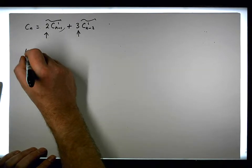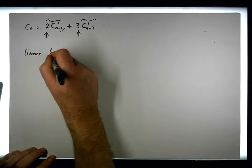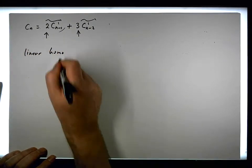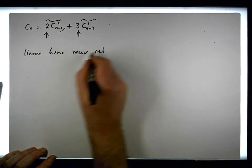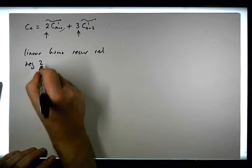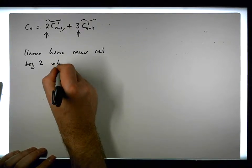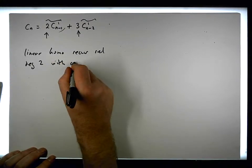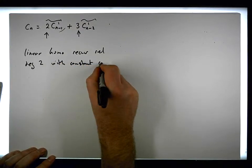So c(n) is a linear homogeneous recurrence relation of degree 2 with constant coefficients.